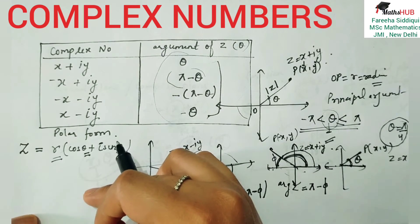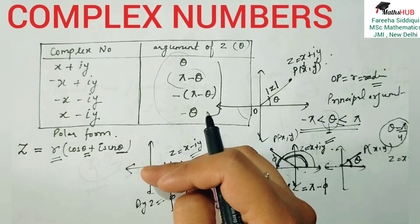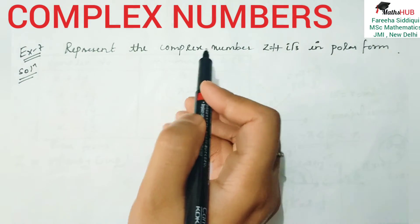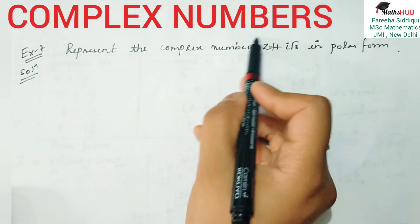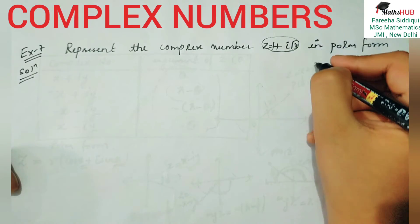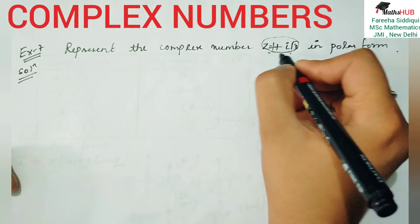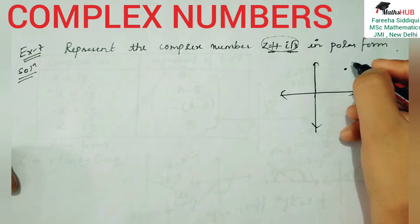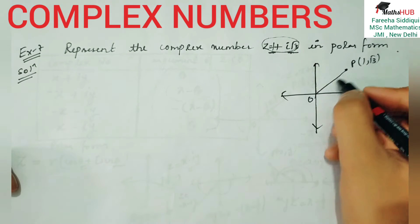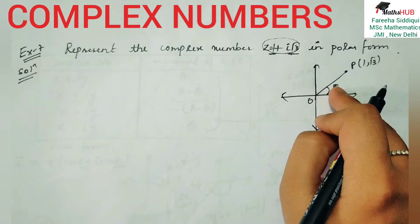Let's start with Example 7, in which we have to find the polar form. Represent the complex number z = 1 + i√3 in polar form. First, let's see which quadrant it belongs to. Both values are positive — x is positive and y is also positive — so it is in the first quadrant. By idea, the coordinates are (1, √3), so the point P is in the first quadrant. Here, theta is the argument. The plotting of (1, √3) is done, and now we have to convert this complex number into polar form.